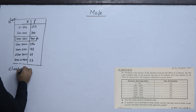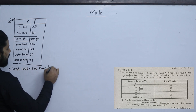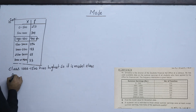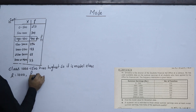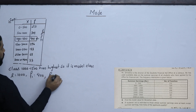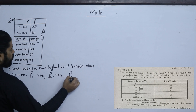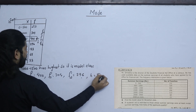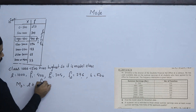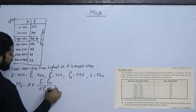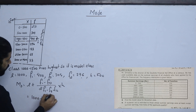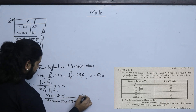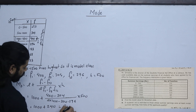The class 1000 to 1500 has the highest frequency, so it is the modal class. Applying the mode formula with the relevant frequencies and class width of 500, the modal value works out to 1240 rupees.